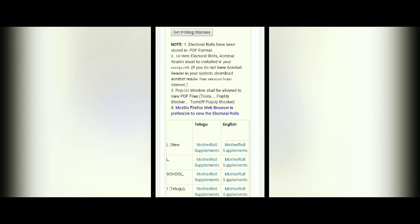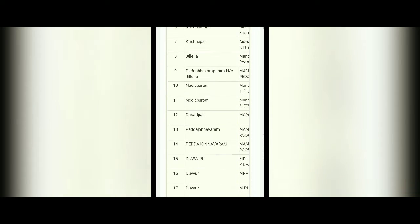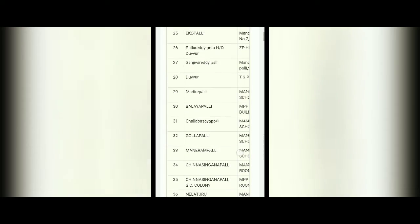There are two options: Mother roll and Supplementary roll. Mother roll refers to voter IDs issued before 2018. Supplementary roll refers to modifications, deletions, or new voter IDs added after renewal. In this, you can find your polling booth station with your code.